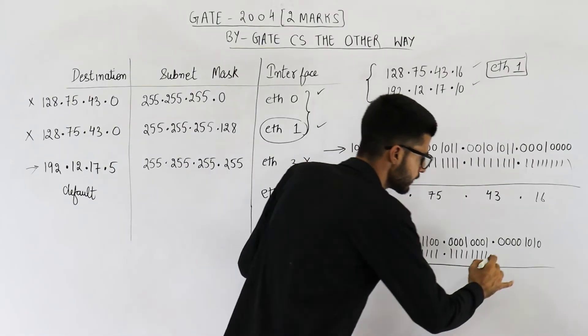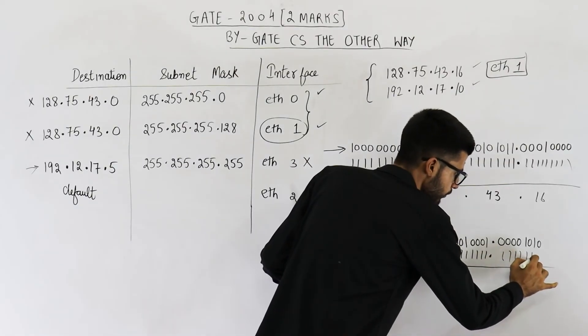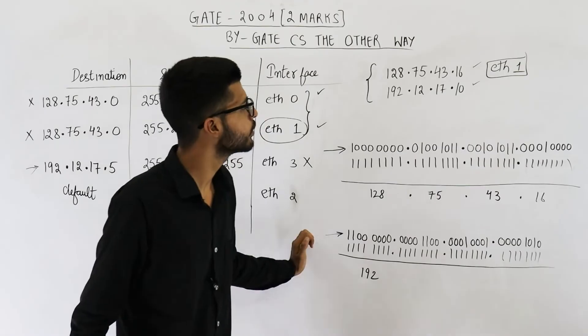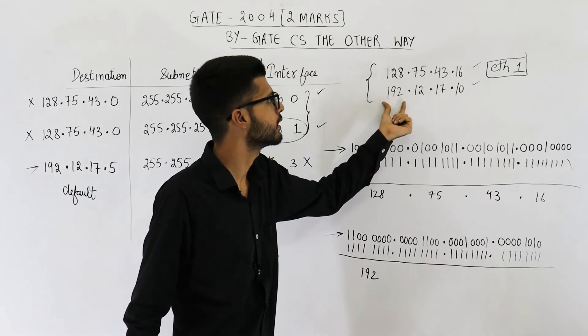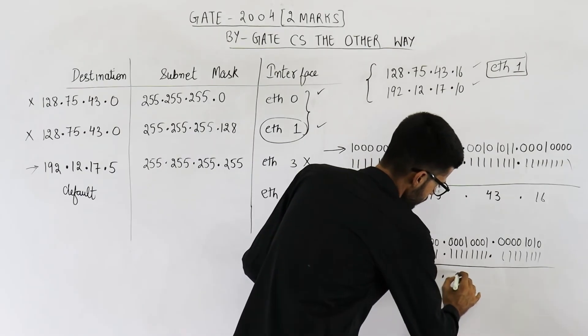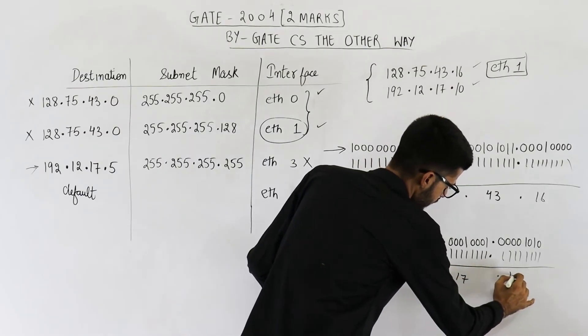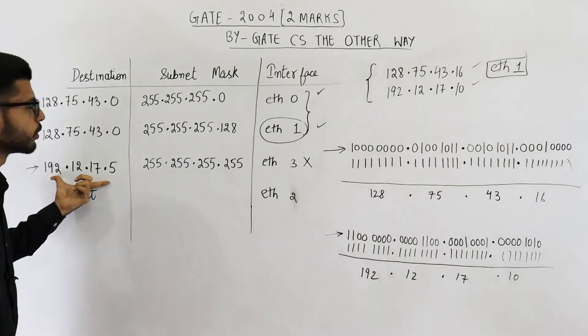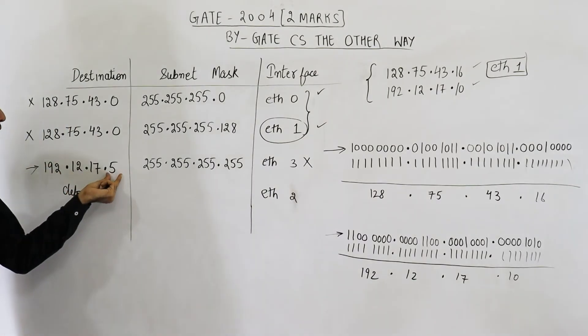If you perform AND of the given IP with all ones, you are going to get that IP address only. So it is 192.12.17.10. 192.12.17.10. Is it a match? No, it is not a match because here we have a 5.